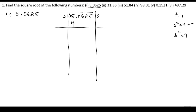We write down 2 again. So 2 plus 2 is 4. If we subtract, we get 1. We bring down 06, giving us 106. Since we have a decimal in the number, we put the decimal point here.